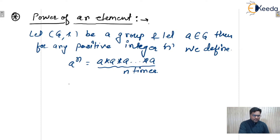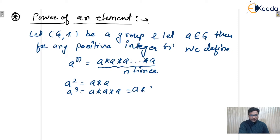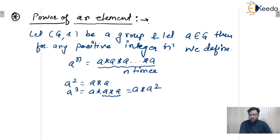The meaning is: a squared means a star a; a cubed means a star a star a, which equals a star a squared. We perform the rightmost operation first, because power is right associative. So a to the power 4 will be a star a cubed, and so on.